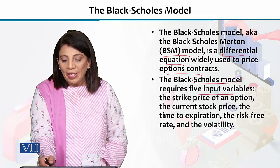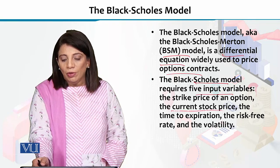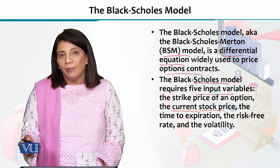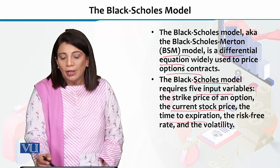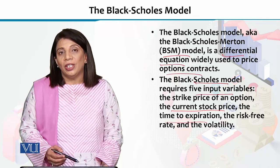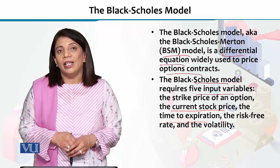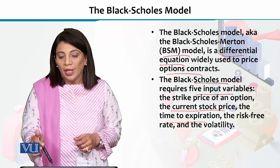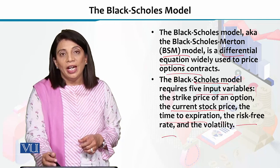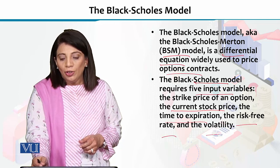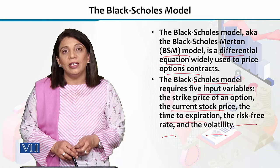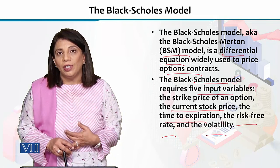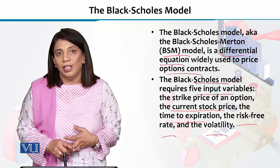Which are the five things? First of all, we need to know the current stock price. In addition, we have to know how much time is left to expiration. Next is what is the risk-free rate. And the fourth important thing — we have talked about historical volatility and implied volatility.